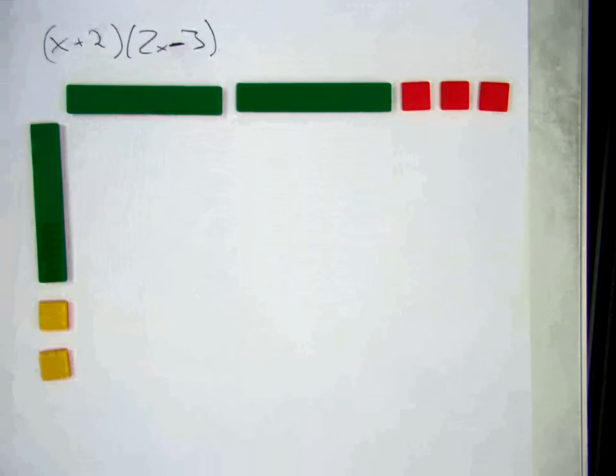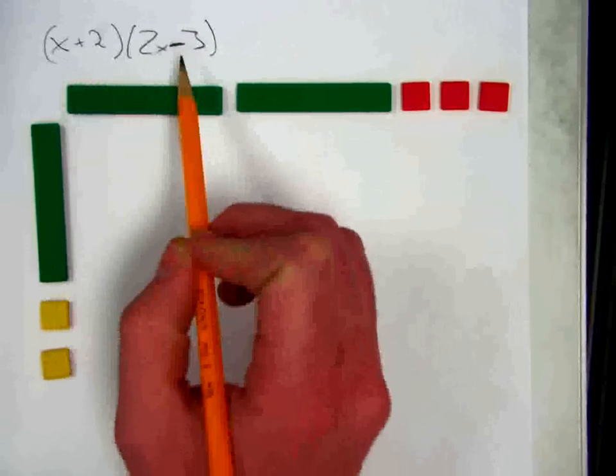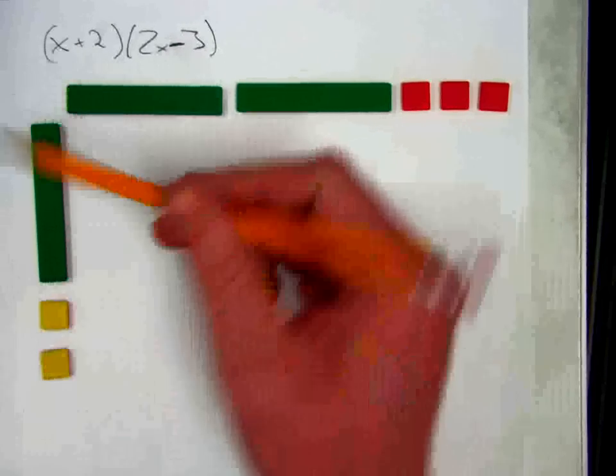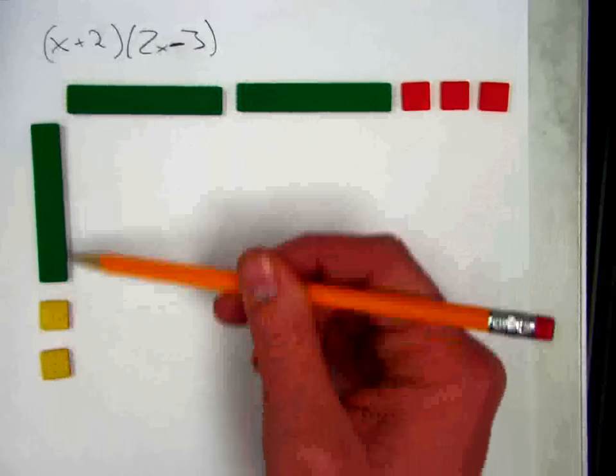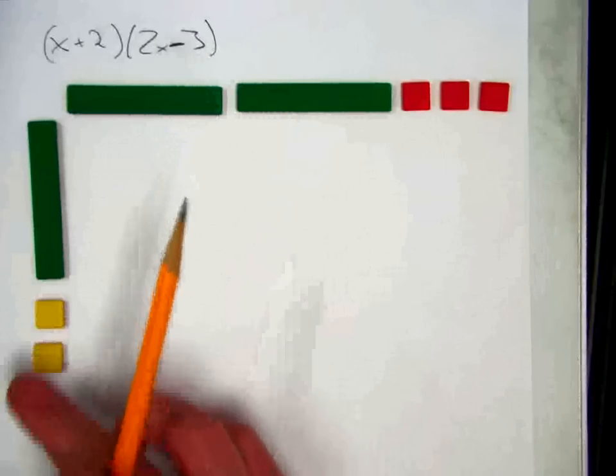To multiply using algebra tiles, I want to start by modeling my two binomials that I'm going to be multiplying. I have x plus 2 listed on the side right here because the green tile represents x and the two yellow unit tiles represent the plus 2.